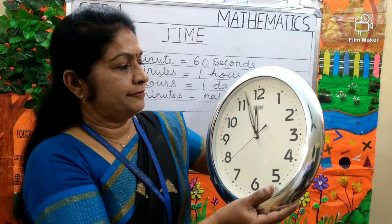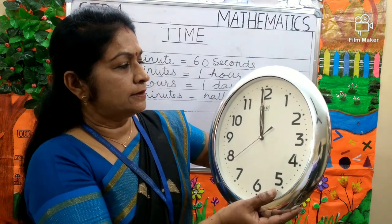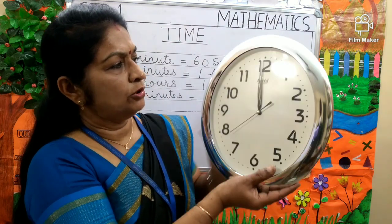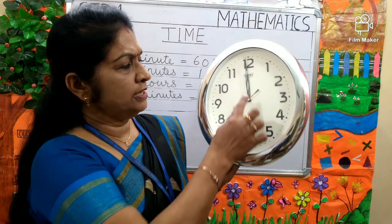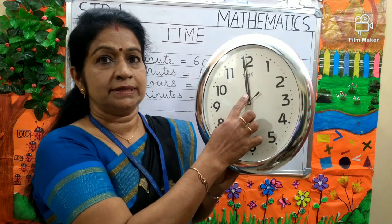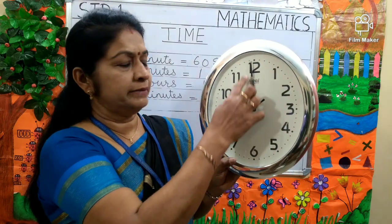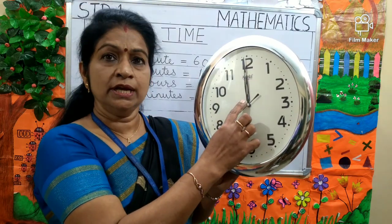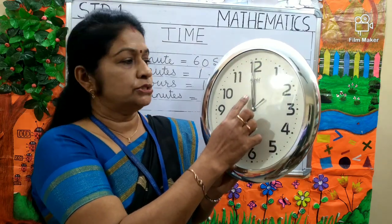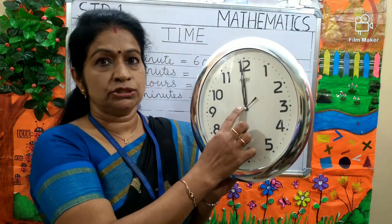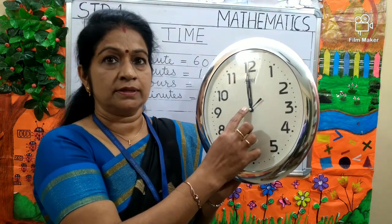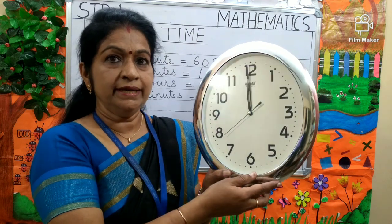Now you see both the hands are on 12. The hour hand and minute hand is on 12. So it is 12 o'clock.